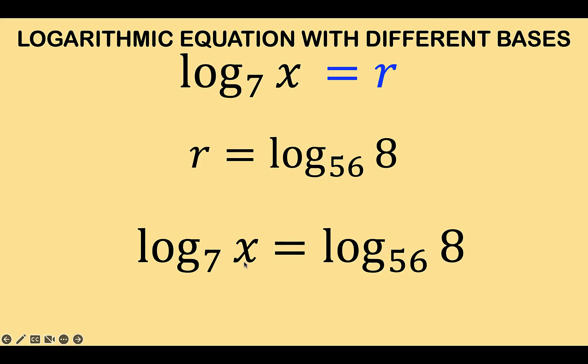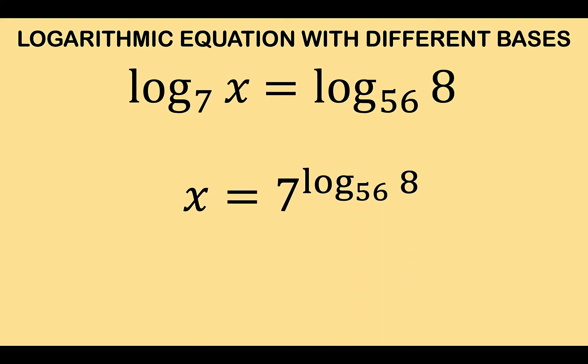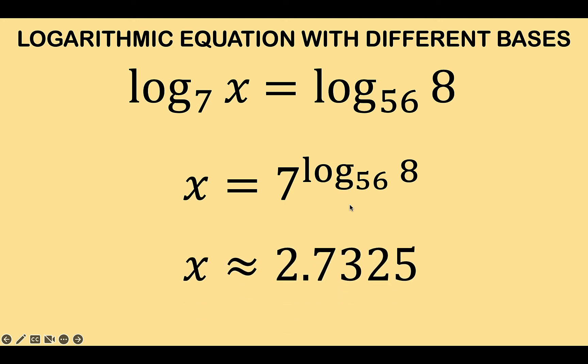And solving now for x, x would be equal to 7 to this exponent. So 7 to exponent log of 8 to base 56 and that is equal to x. And this is a constant that is approximately equal to 2.7325.